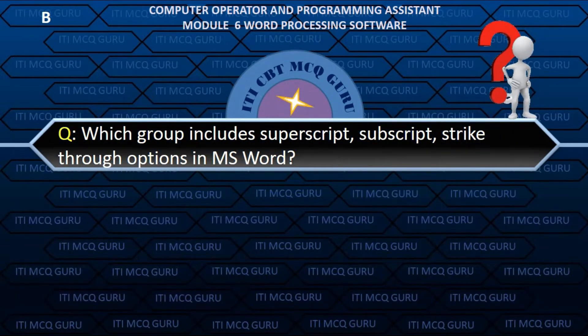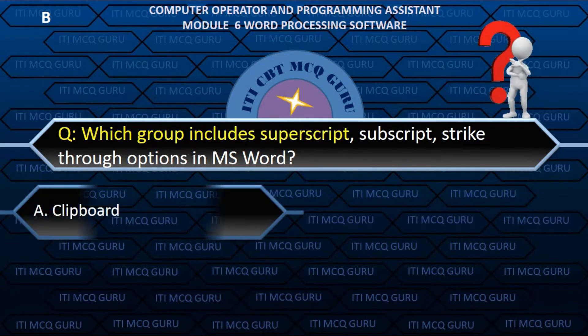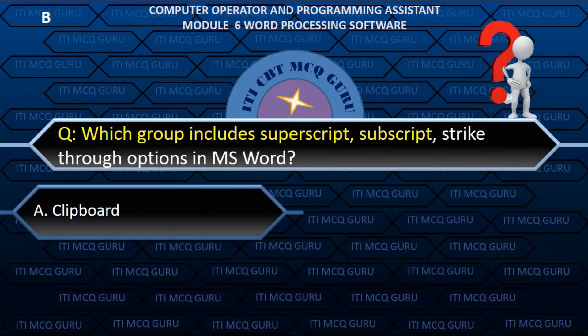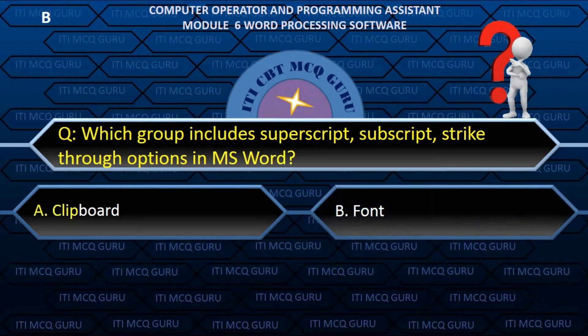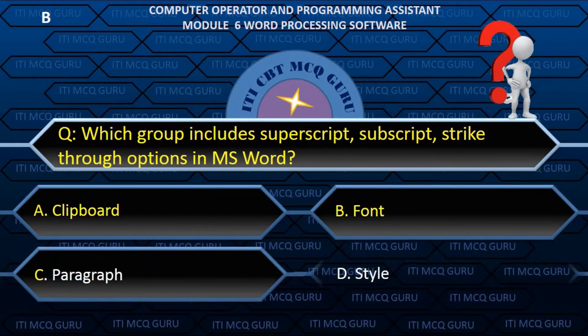Which group includes superscript, subscript, and strikethrough options in MS Word? B. Font.